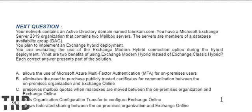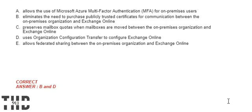What are the two benefits of using Exchange Modern Hybrid instead of Exchange Classic Hybrid? Option A: Allows use of Microsoft Azure multi-factor authentication for on-premises users. Option B: Eliminates the need to purchase publicly trusted certificates for communication between the on-premises organization and Exchange Online. Option C: Preserves mailbox quotas when mailboxes are moved between the on-premises organization and Exchange Online. Option D: Uses organization configuration transfer to configure Exchange Online. Option E: Allows federated sharing between the on-premises organization and Exchange Online. The correct answers are Option B and D.